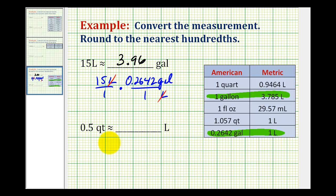In our second example, we want to convert 0.5 quarts, or five-tenths of a quart, to liters. So we'll follow the same process. Write this in fraction form, and we'll multiply by a unit fraction.